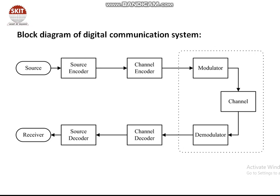Next is the modulator. The modulator is the block where we combine a high frequency carrier signal with the information signal. The four blocks — source, source encoder, channel encoder, and modulator — are all part of the transmitter.